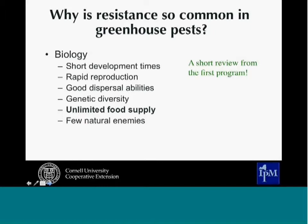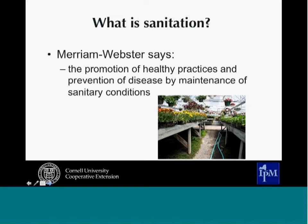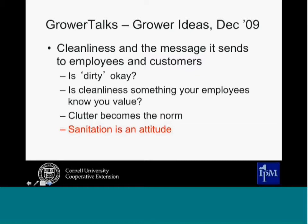One reason pesticide resistance is so common in greenhouse pests is the unlimited food supply. When you're looking at sanitation and cultural methods, you're often trying to reduce that food supply for insects — through managing weeds, algae, and other sources. Looking at Merriam-Webster's definition, sanitation is the promotion of healthy practices and the prevention of disease, insect pests, weeds, or algae by maintenance of sanitary conditions.